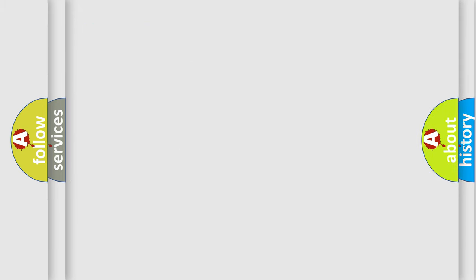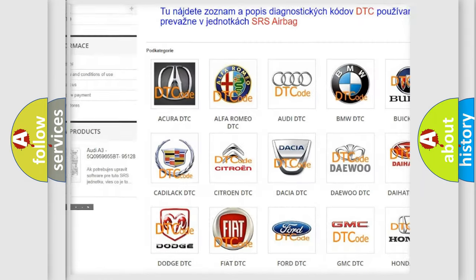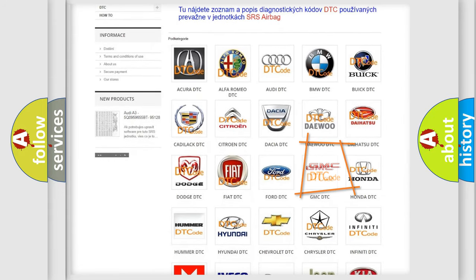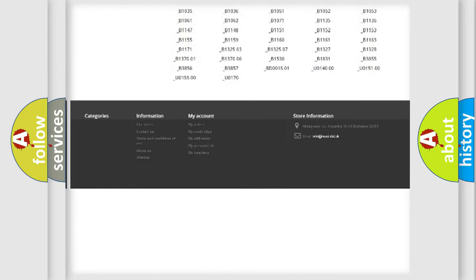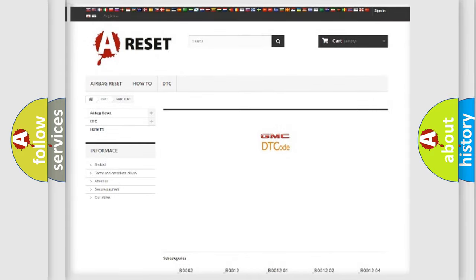Our website airbagreset.sk produces useful videos for you. You do not have to go through the OBD2 protocol anymore to know how to troubleshoot any car breakdown. You will find all the diagnostic codes that can be diagnosed in GMC vehicles. Also many other useful things.